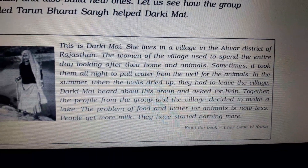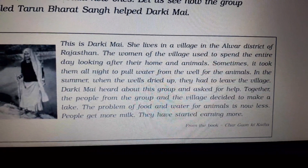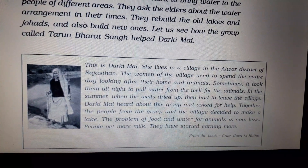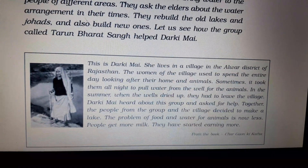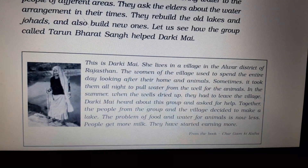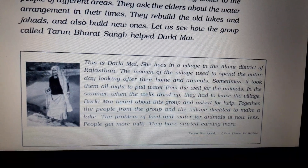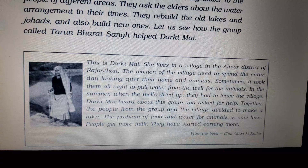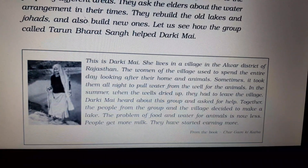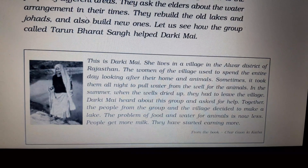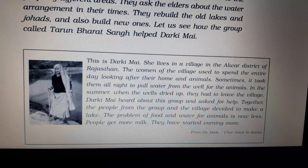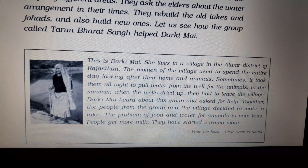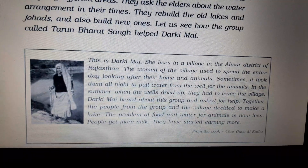Darki Mai lives in a village in the Alwar district of Rajasthan. The women of the village used to spend the entire day looking after their home and animals. Sometimes it took them all night to pull water from the well for the animals. In the summer, when the wells dried up, they had to leave the village. Darki Mai heard about this group and asked for help. Together, the people from the group and the village decided to make a lake. The problem of food and water for animals is now less, people get more milk, and they have started earning more.